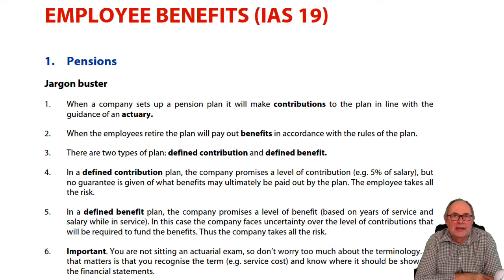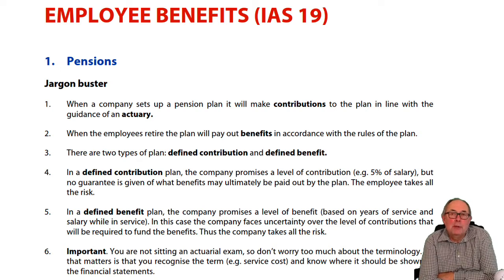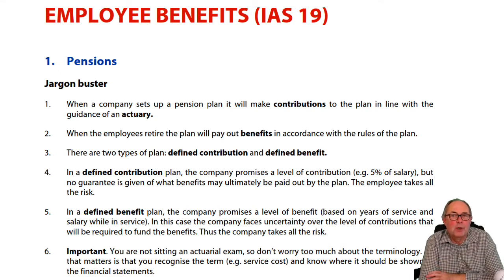We're going to talk about IAS 19 employee benefits. This was really written to sort out accounting for pension plans. The employer might decide, or might be forced, to set up a pension scheme for their staff so that when they retire, they've got some kind of income. There's a lot of jargon associated with this, but in practice you don't have to get very stressed about it because the jargon would be dealt with by an actuary. The actuary who comes in and values the pension would say the so-and-so cost is this — you just have to recognise the word and decide where to put it.